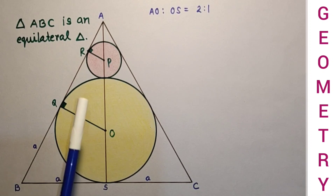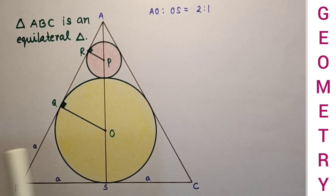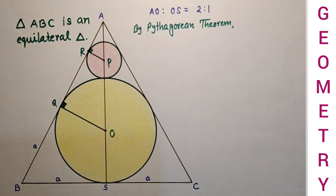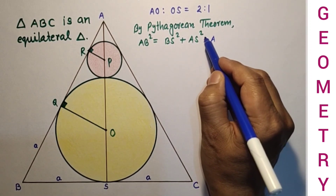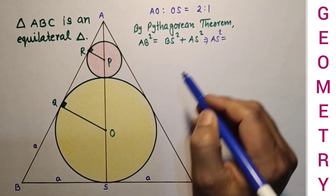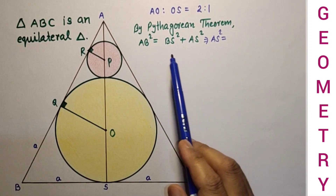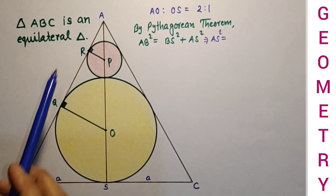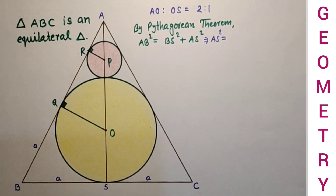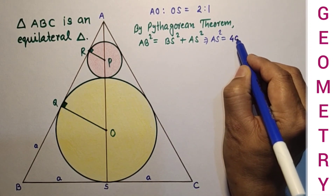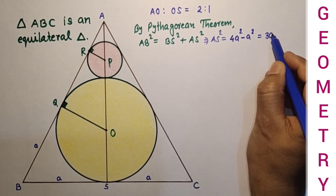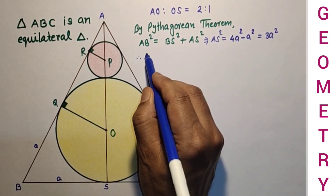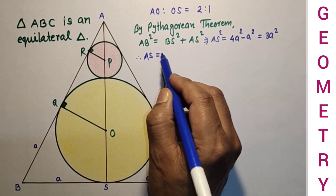If we use the Pythagorean theorem here in triangle BSA: AB squared equals BS squared plus AS squared, so AS squared equals AB squared minus BS squared. AB is 2A, so AB squared is 4A squared, and BS squared is A squared. Therefore AS squared equals 4A squared minus A squared equals 3A squared, and AS equals A root 3.